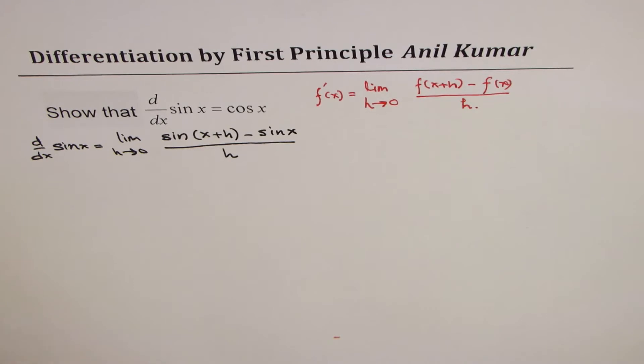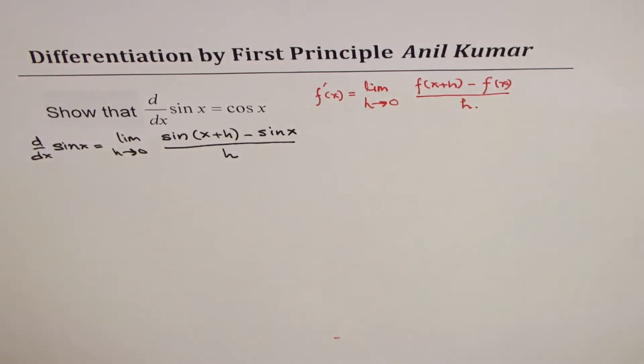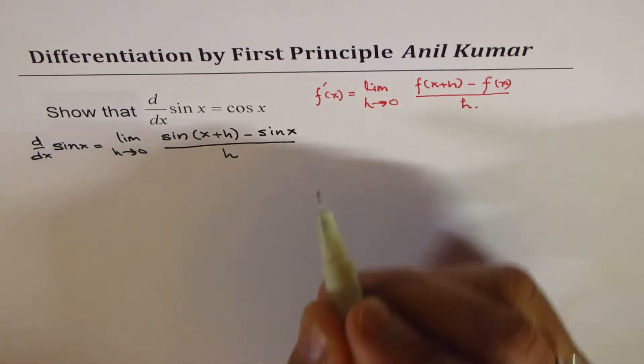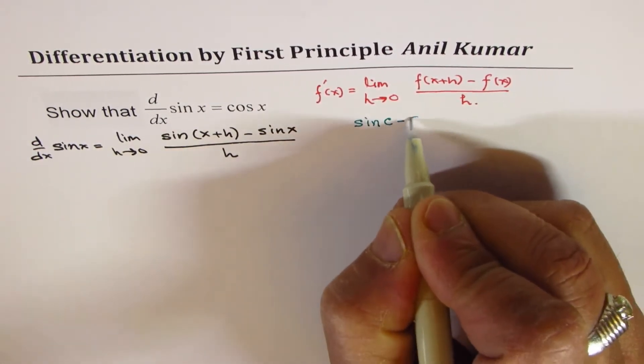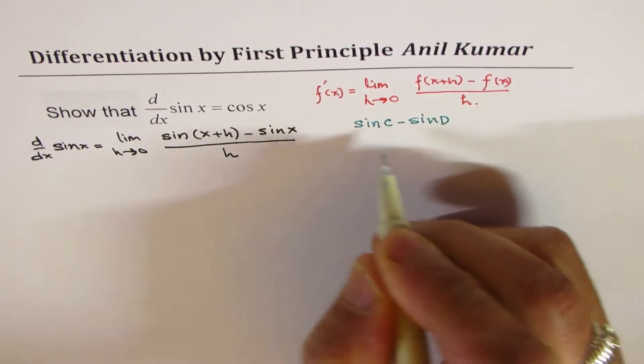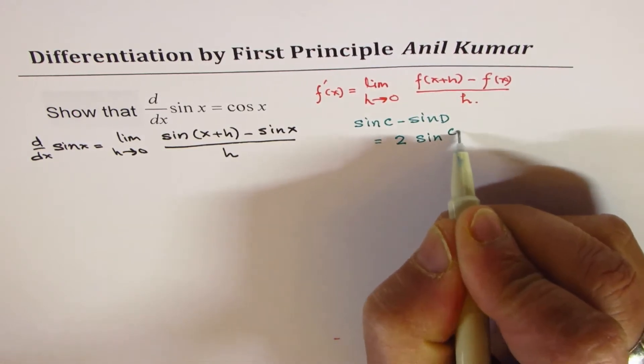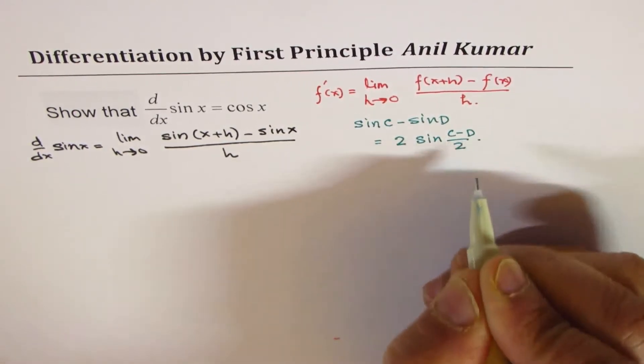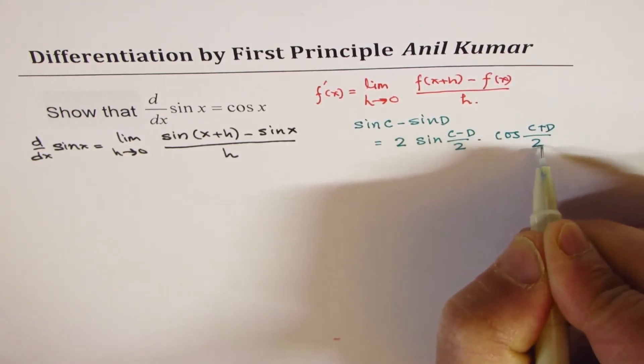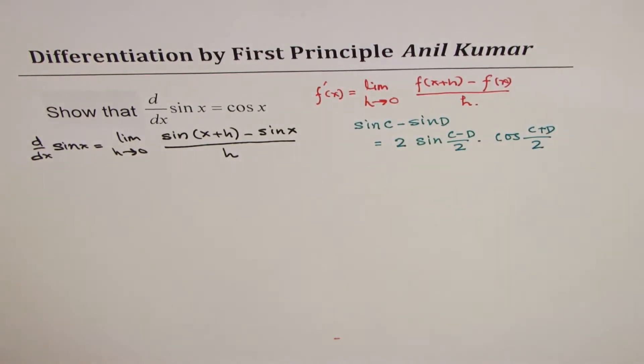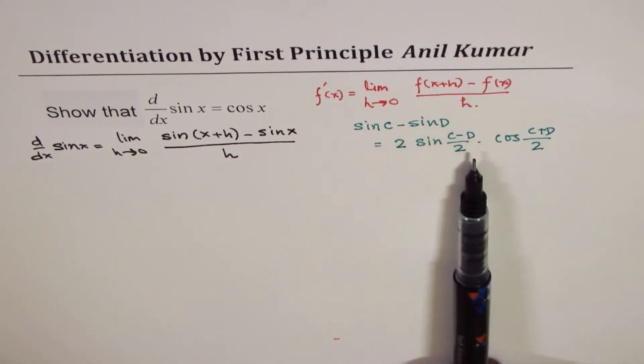Now, I hope you remember a few trigonometric formulas. If you have sine of c minus sine of d, it could be written as 2 sine of c minus d over 2 times cos of c plus d over 2. That is a formula which is applied to convert difference into product for trigonometric functions.